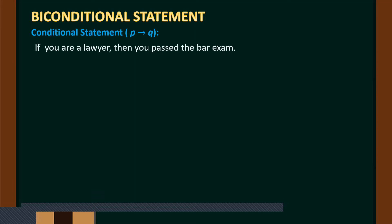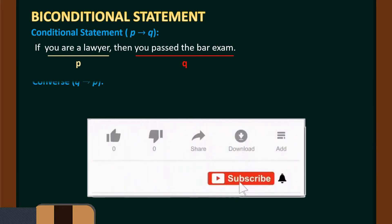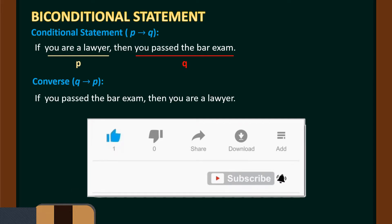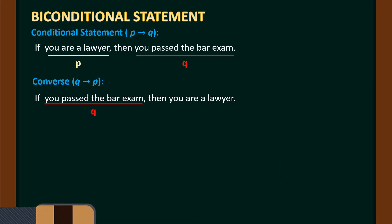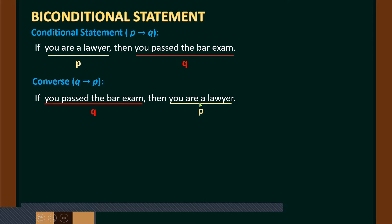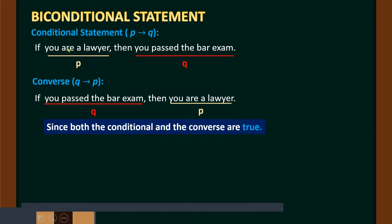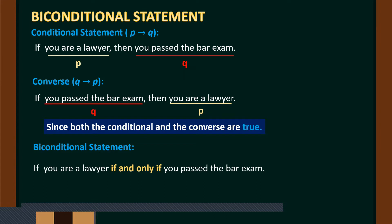Another conditional statement: 'If you are a lawyer, then you pass the bar exam.' Our hypothesis is 'you are a lawyer,' and our conclusion is 'you pass the bar exam.' For the converse: 'If you pass the bar exam, then you are a lawyer.' The hypothesis and conclusion interchange. Since both the conditional and the converse are true — only lawyers have a bar exam — we can write the biconditional: 'You are a lawyer if and only if you pass the bar exam.'